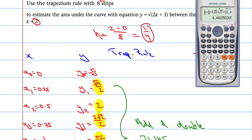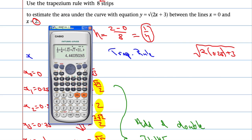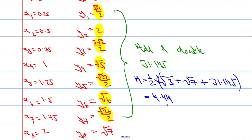Just before finishing up, let's verify by computing the exact integral of √(2x + 3) between 0 and 2 on the calculator. The exact answer is also 4.44, confirming our trapezium rule approximation was as accurate as it could be. Hopefully you found that video useful — all the best and take it easy.